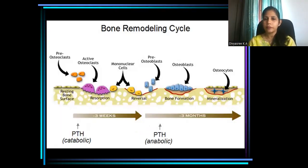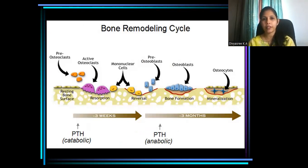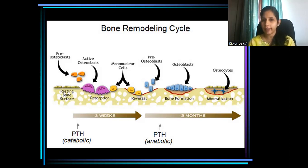Alveolar bone constantly undergoes remodeling. It has got a formative phase as well as a resorptive phase. The cells involved in formation are osteoblasts, whereas the cells involved in resorption are osteoclasts.